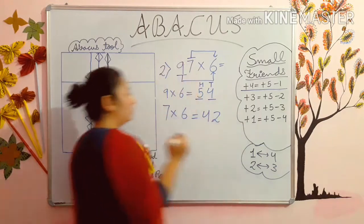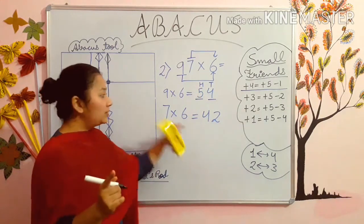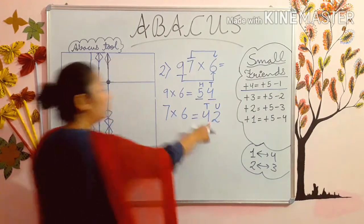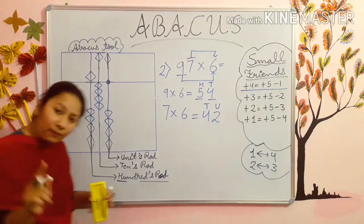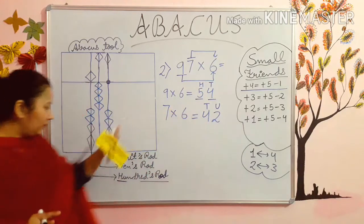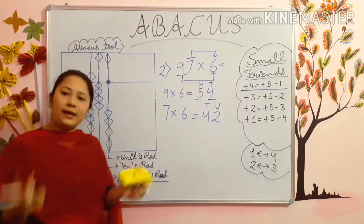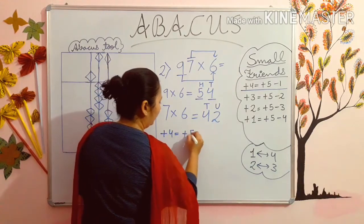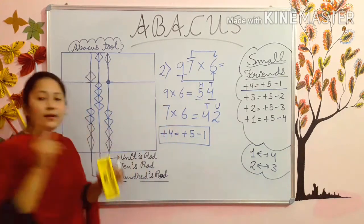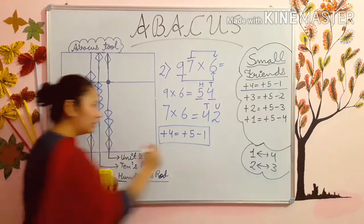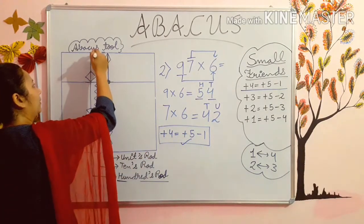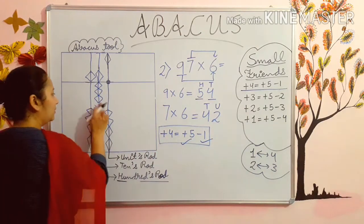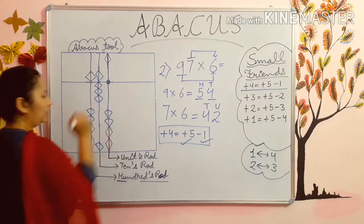Students, learn the dodging — dodging is a must. You have to learn it; then only you can do the sums in a quick way. This will go in units rod and this will go in tens rod. Now 4 in tens rod — again the same problem. You have to add 4, but 4 is already added. So how will you add 4 again? Use the small friends formula for adding 4. First of all, for adding 4 what you have to do? Plus 5. Then you have to do minus 1 — 1 bead down. Your 4 is added.